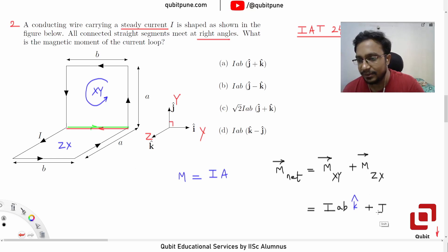So magnitude wise it will be I*A*B, J cap. Now let's confirm that there is J cap. The current is flowing like this.